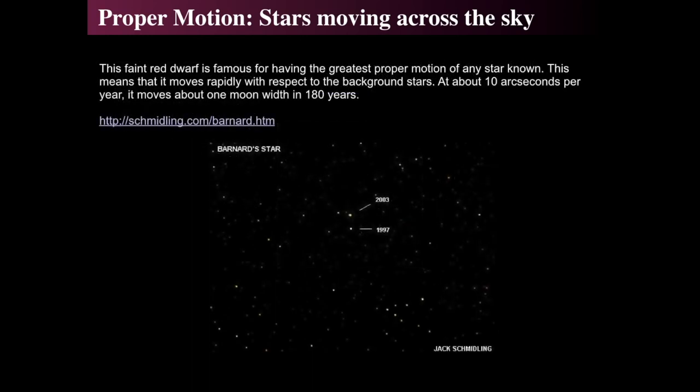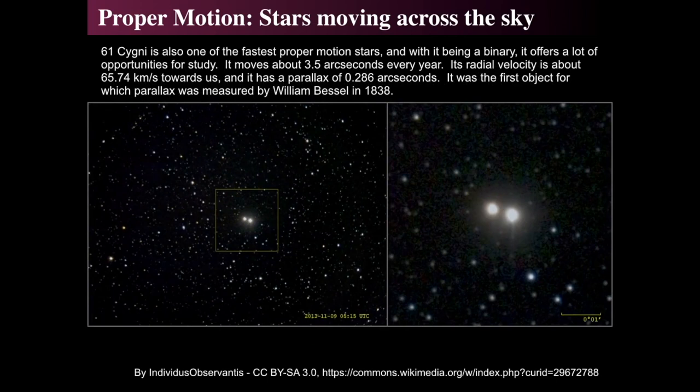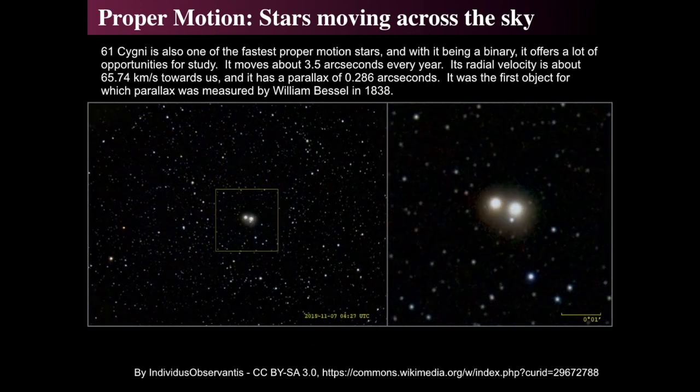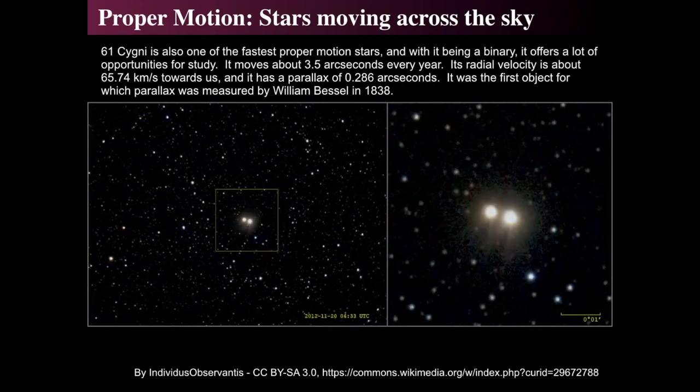Barnard's star is a faint red dwarf and the fastest proper-motion star in the sky — it will move the width of the Moon in about 200 years, or about one degree in about 400 years. Another notable star is 61 Cygni, also one of the fastest proper motion stars and a binary — it was the first object for which parallax was ever measured, by William Bessel in 1838.